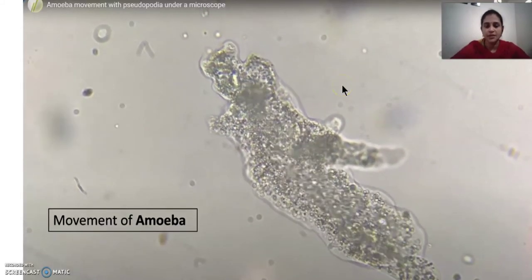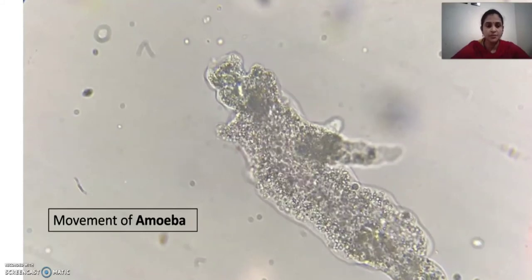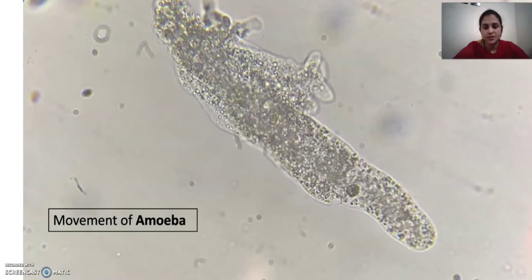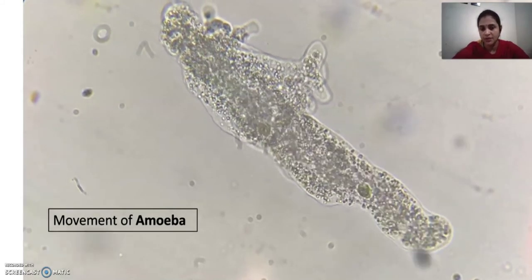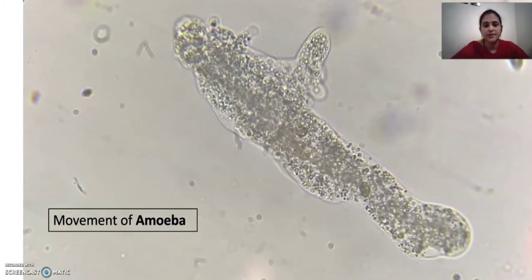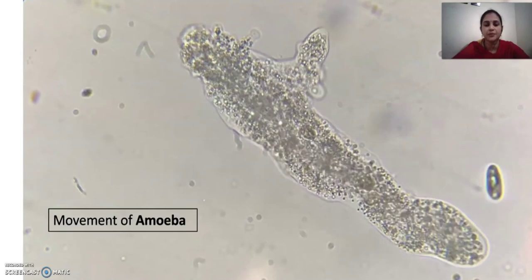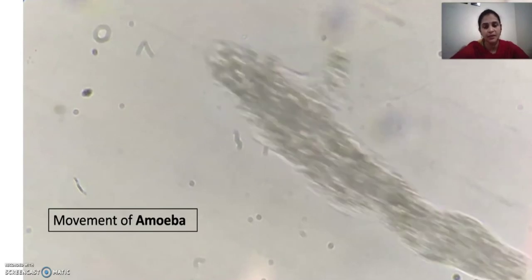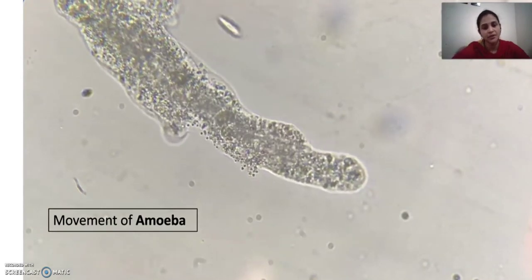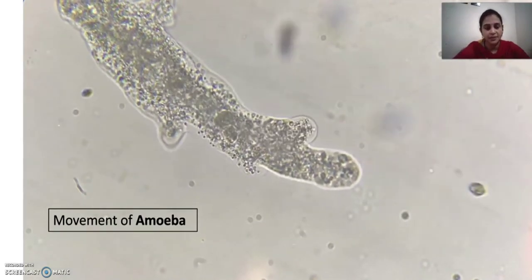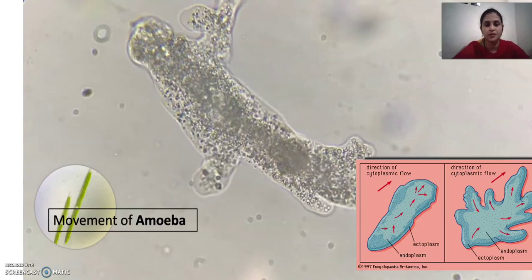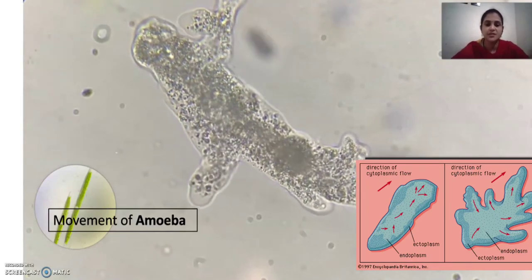Amoeba is an example of kingdom Protista and is one of the simplest organisms. Kingdom Protista comes under eukaryotes but is unicellular, and it has a definite nucleus with a nuclear membrane. It has two types: plant-like and animal-like. Animal-like examples are amoeba and paramecium; plant-like examples are euglena and diatoms. Plant-like means they make their own food; animal-like means they cannot make their own food. Amoeba has pseudopodia, nucleus, cytoplasm, and moves using amoeboid movement.